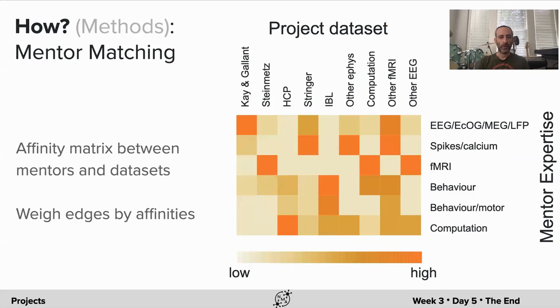We also tried to weight the edges by an affinity between the mentors and the datasets that the projects were using. We weighted those edges and that affected the flow.